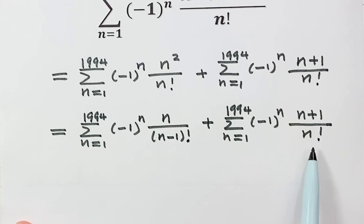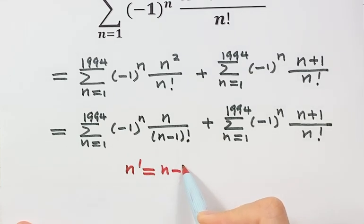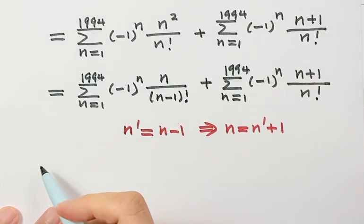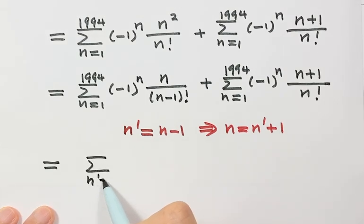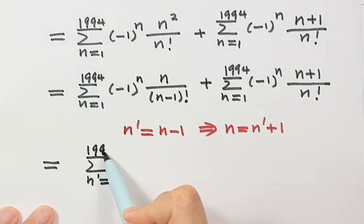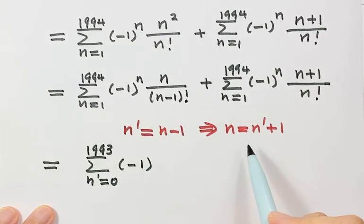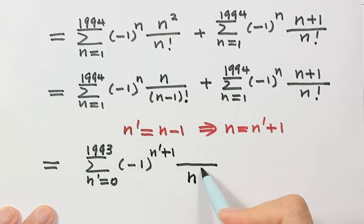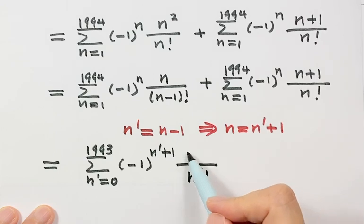Next, because the first sum has n minus 1 factorial on the bottom, we want it to match the same pattern as the second sum. So we do a substitution: let n' equal n minus 1, so n equals n' plus 1. After substitution, the first sum runs n' from 0 to 1993, with negative 1 to the power of n' plus 1, times n' plus 1 on top and n' factorial on the bottom.